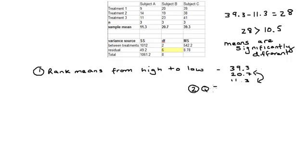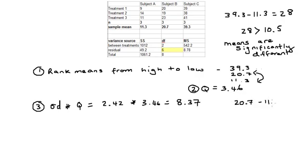We multiply sigma D, which we calculated before as 2.42, by our new Q value of 3.46. That gives us 8.37.